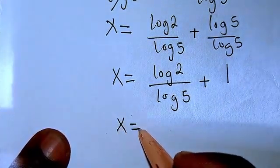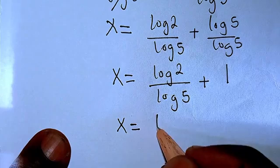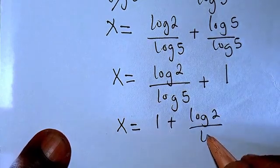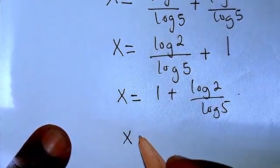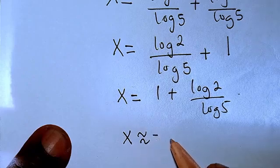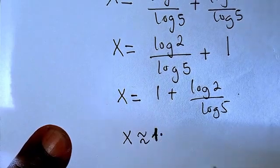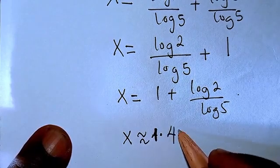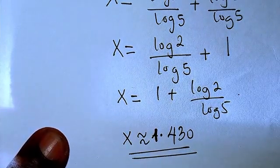So from there I have x to be equals 1 plus log 2 over log 5. But approximately you can have x to be equals 1.430, and that's the solution.